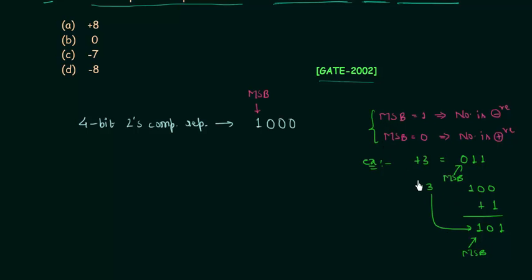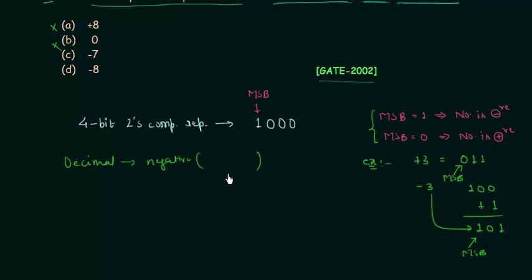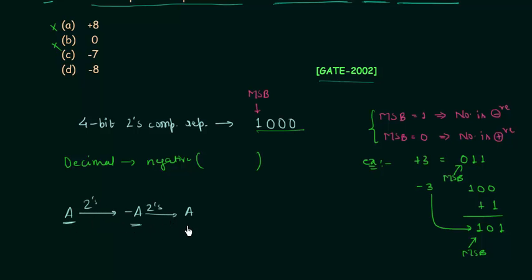Since MSB is 1, the decimal number is negative, so options A and B are incorrect. We know the number is negative, but we want to find its magnitude. To do so, we take the 2's complement of this binary number — because taking the 2's complement of a number A gives minus A, and taking it again gives A back.